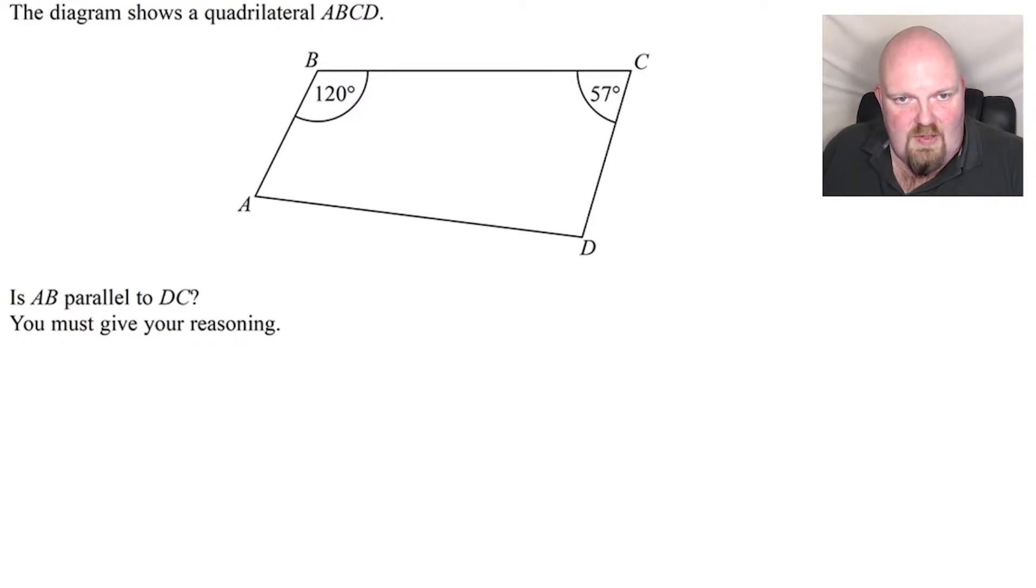Essentially what it's doing is asking whether this line and this line are parallel. There are quite a few things that aren't given in this question. It'd be nice to know this angle, it'd be nice to know this angle, but we're not given any of that. So because we're not given them, you need to think carefully about what we have been given and what you already know.